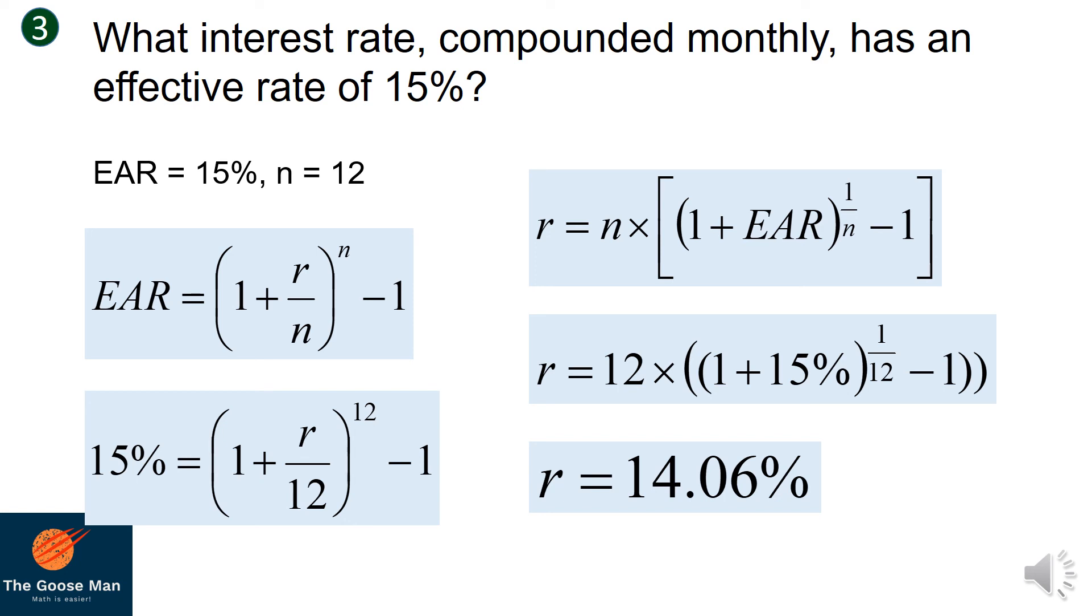Take note that the nominal rate is always lower than your effective annual rate. To summarize, the nominal interest rate is the stated interest rate, but the effective interest rate caters the compounding periods during a payment plan. And take note also that the nominal rate is always less than your effective annual interest rate.